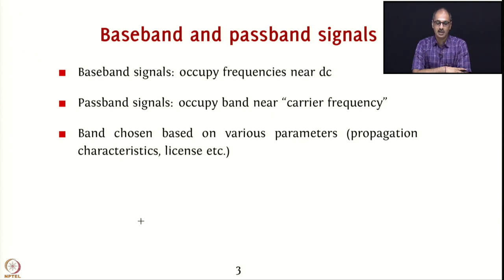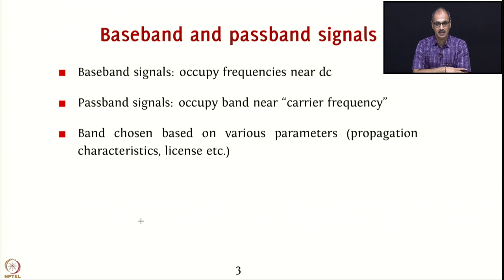In this situation, the 10 MHz signal is the baseband signal and the carrier frequency is 2.4 GHz. The choice of these values depends on various parameters and how the standard is designed — there are propagation characteristics, licenses available for transmission, and several other factors that determine the passband signal's characteristics both in terms of carrier frequency and bandwidth.